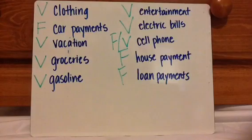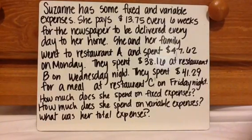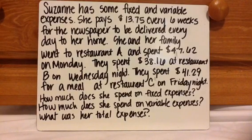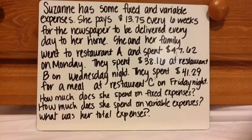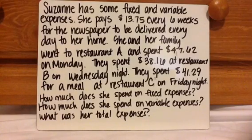Now let's look at some word problems and calculate variable and fixed expenses. Suzanne has some fixed and variable expenses. She pays $13.75 every six weeks for the newspaper delivered to her home. She and her family went to Restaurant A and spent $47.62 on Monday, $38.16 at Restaurant B on Wednesday, and $41.29 at Restaurant C on Friday night. How much does she spend on fixed expenses? How much on variable expenses? What was her total expenses? Identify which are fixed and which are variable, and explain why.